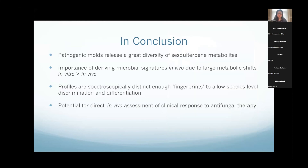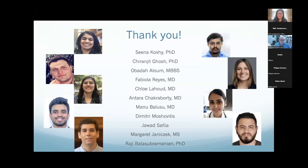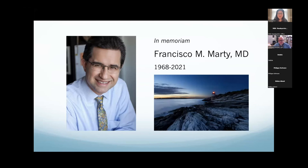In conclusion, these pathogenic molds release a great variety of sesquiterpene metabolites, and they're all quite species-specific and distinct from each other. It's really important to study these in vivo because there are large metabolic shifts when you study these molds in vitro versus in vivo with the overlay of the immune system and the oxidative environment. These profiles are spectroscopically distinct from each other — fingerprints that allow species-level discrimination and differentiation. This allows the potential for direct in vivo assessments for diagnostics and for monitoring the fungus's response to antifungal therapy. I want to thank everyone in my lab and also remember Francisco Marty, who inspired much of this work from early conversations years ago.